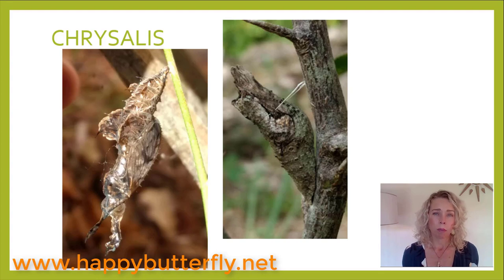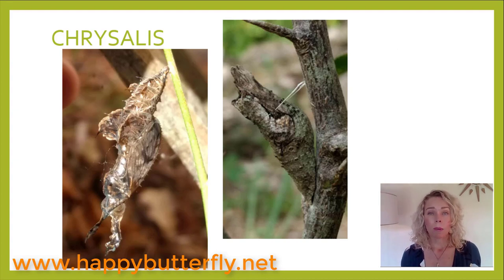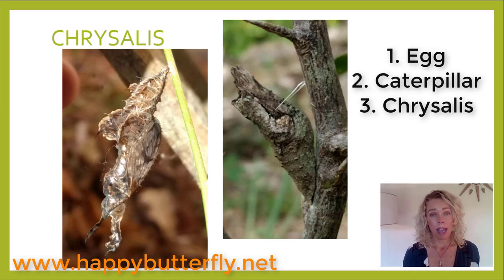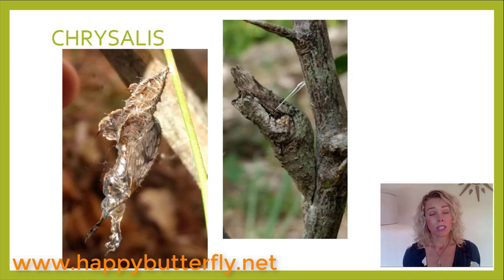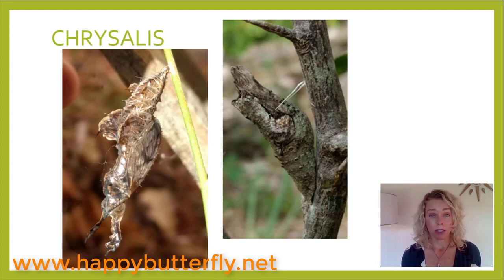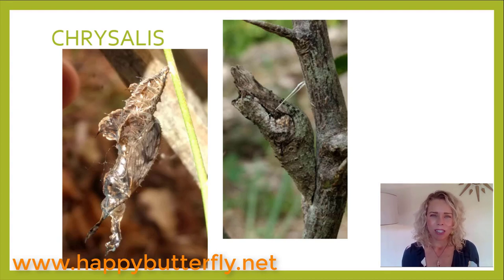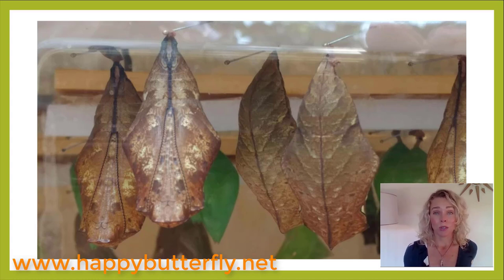The chrysalis is the third stage of the butterfly life cycle and is still considered a juvenile stage. So far we've had three juvenile stages: an egg, a caterpillar, and a chrysalis. The chrysalis form is very dangerous because the insect can't change its location, and many butterflies overwinter as a chrysalis. Predators like birds would love to eat one. Every species makes its own unique type of chrysalis, and butterfly experts can identify the species just from the chrysalis.